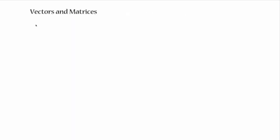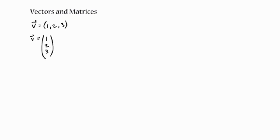A vector is just a bunch of numbers arranged in a column or in a row. Usually they're given a hat — so this is my vector. This is a row vector, this one's a column vector. And the number of elements in your vector determines its dimensionality.